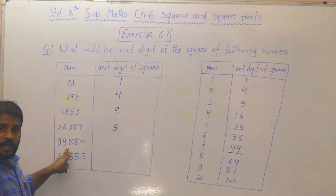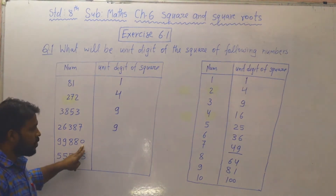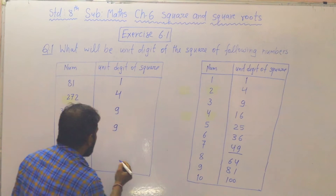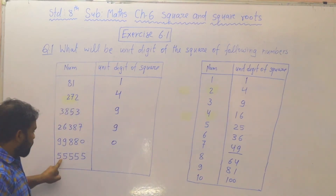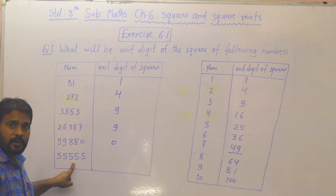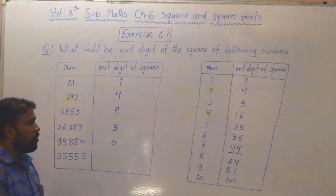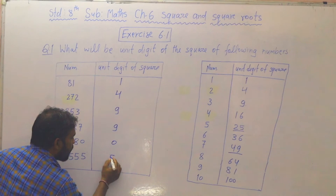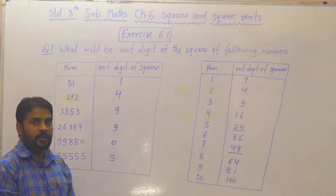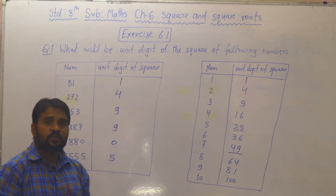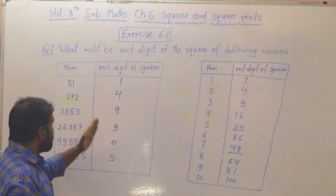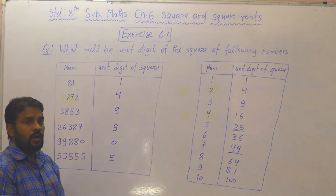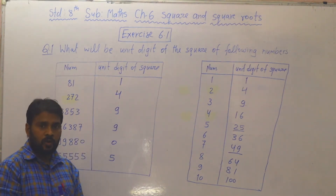इसी तरह से 99,880 है, तो unit digit 0 है. 10 का square 100 — यहाँ पे unit digit 0 है, तो यहाँ पे unit digit 0 आता है. 55,555 — unit digit 5 है, 5 का square 25, तो square करने के बाद unit digit 5 आएगा. तो दोस्तों, इस तरह से कोई भी number हो, उसका square करने के बाद unit digit क्या होगी — उस number के unit digit का square कीजिए, जो unit digit होगी वही इसके square का unit digit होगा.